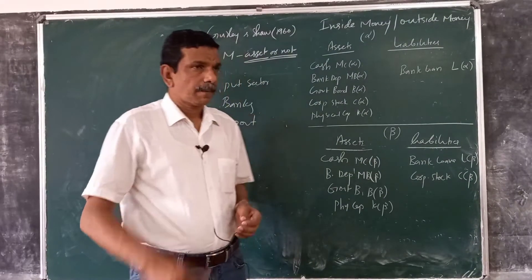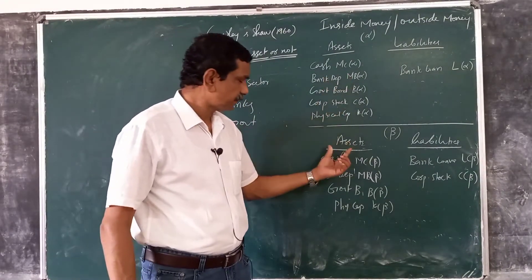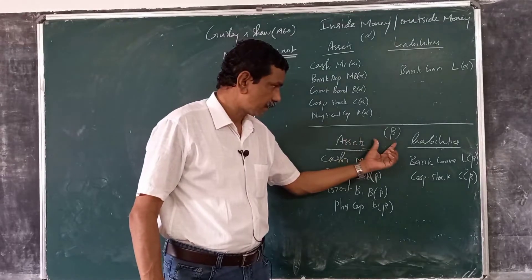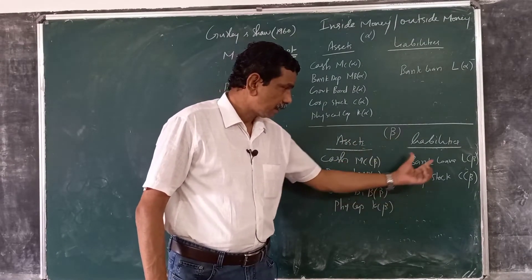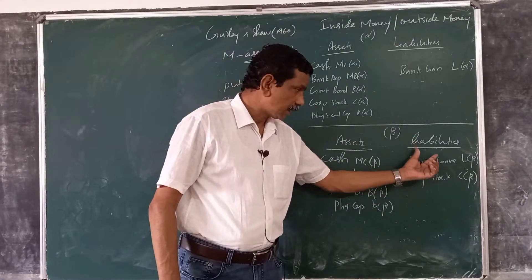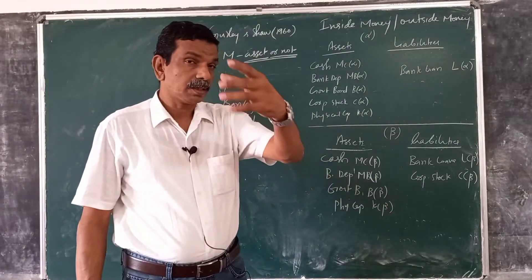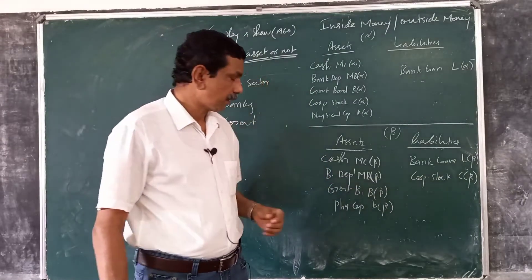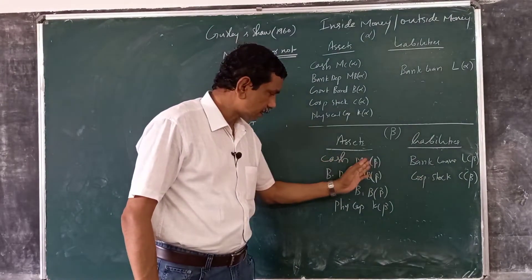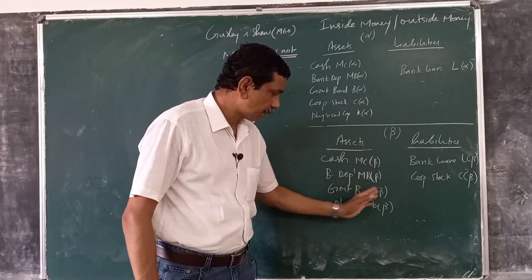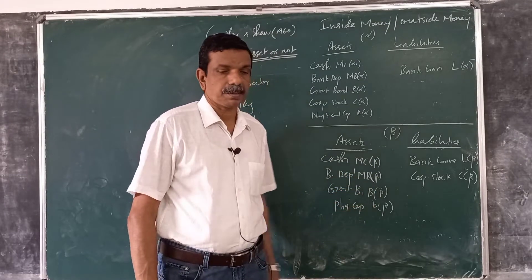Similarly, the balance sheet of the firms is given here. Liabilities are bank loans and corporate stock — stock issued by the company. Assets are cash, bank deposits, government bonds, and physical capital.